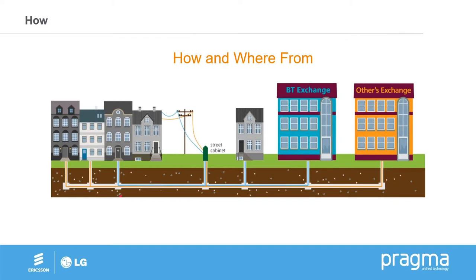Moving on from FTTC, we've got FTTP — fibre to the premise. With FTTP, we run fibre from the BT exchange all the way to the customer's front door. It runs via the local cabinet but still goes all the way to the front door, delivering speeds of up to 120 meg. And last but not least, there's a leased line. A leased line comes from the BT exchange or any other ISP's exchange — businesses like TalkTalk, Glide, or Spectrum who have their own network. Essentially, a leased line is a dedicated route from the exchange all the way to your customer's offices — like them having their own private road — and then you decide what speeds are pumped along it.